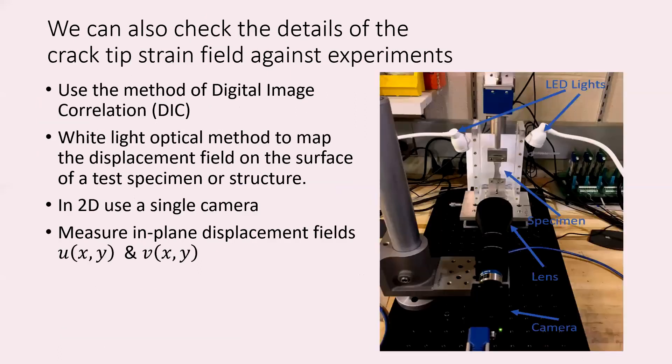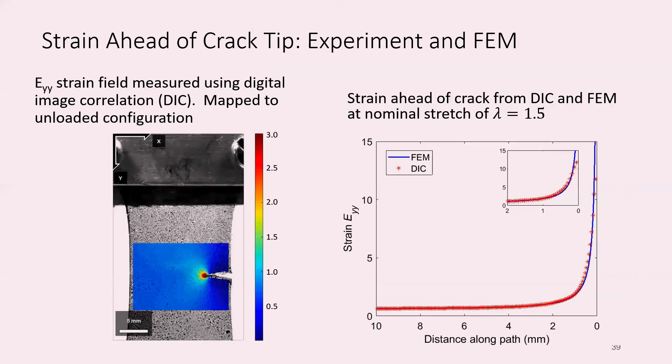The last verification is we looked at the crack tip strains using digital image correlation, comparing the strain from DIC to the strain calculated from computational analysis. On the left is the vertical strain field mapped onto the unloaded configuration. On the right, we take a line from the crack tip going to the left and plot the strain ahead of the crack from computational analysis (blue curve) and from our DIC (red dots). Up to a tenth of a millimeter or so, we get good agreement between the computational analysis and the DIC. At least up to that level, we have confidence that we're able to accurately compute the crack tip fields.